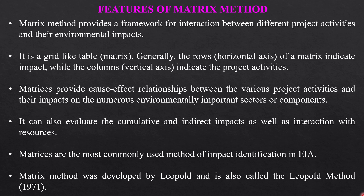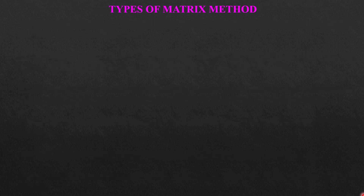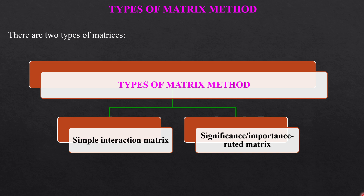The method was developed in 1971. There are generally two types of matrix: the simple matrix and the significance or importance-related matrix.